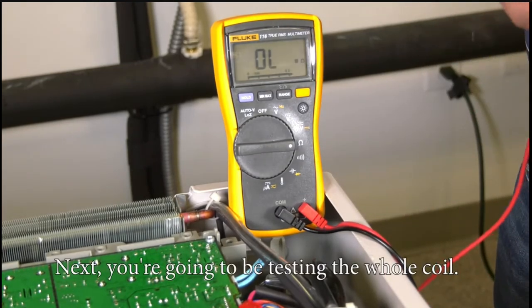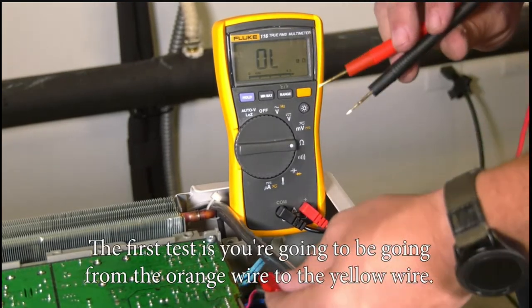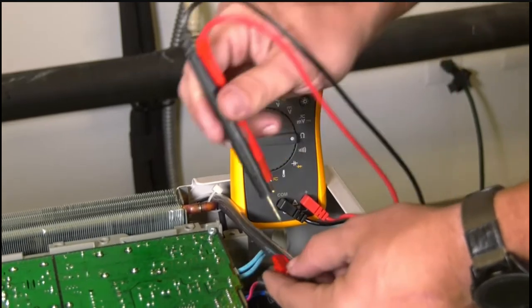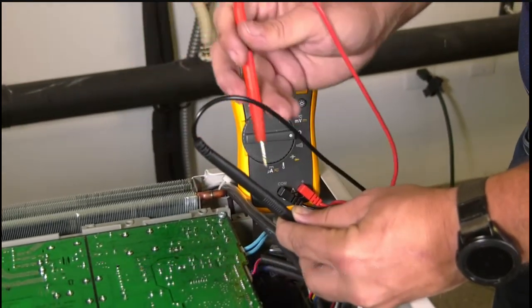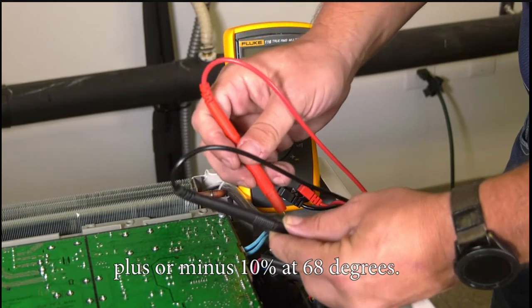Next you're going to be testing the whole coil. The first test, you're going to be getting a reading of 92 ohms plus or minus 10 percent at 68 degrees.